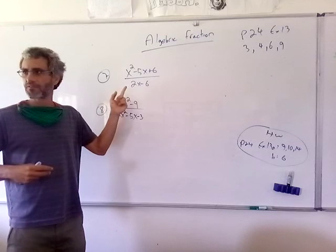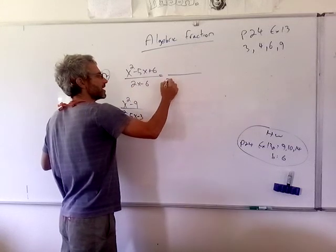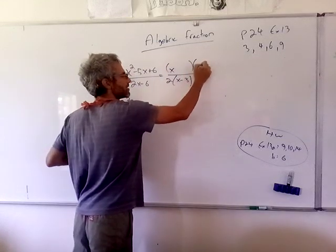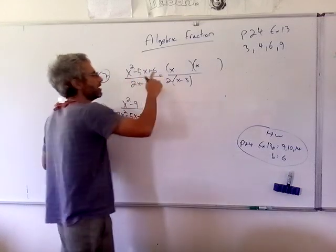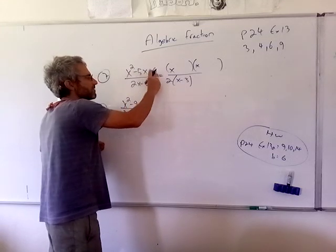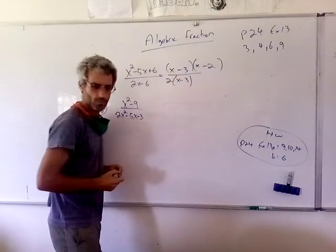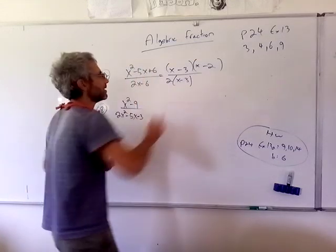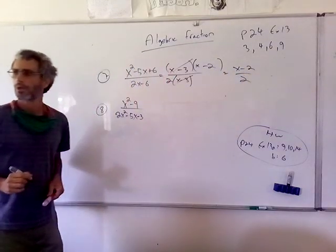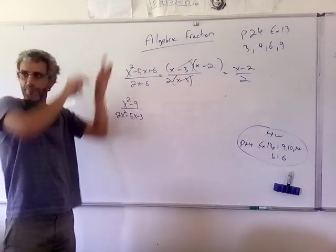Next example: we have a trinomial on top and a simple factor on the bottom. Take 2 out from the bottom: 2 times (x minus 3). For the trinomial — there's a 1 in front of x squared, so I need two numbers that add to minus 5 and multiply to 6. Since both conditions point to negatives, those numbers are minus 3 and minus 2. Cross-cancel (x minus 3), and we get (x minus 2) divided by 2.